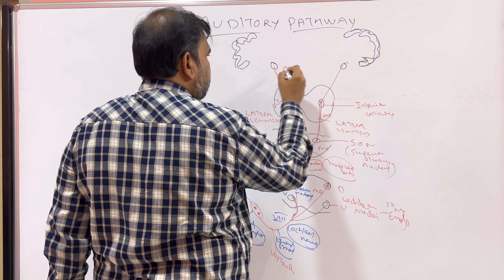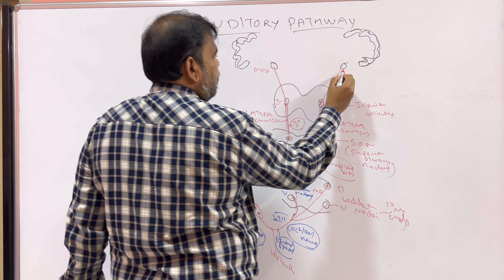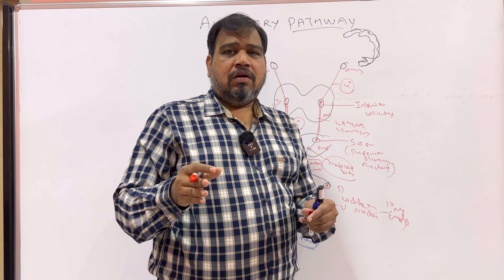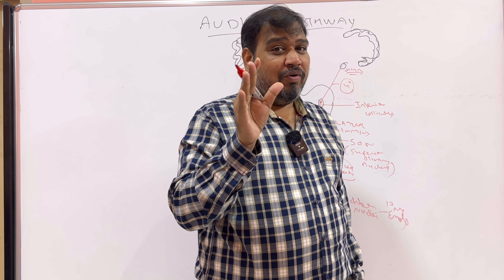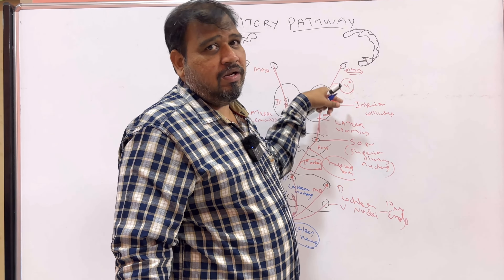From the inferior colliculus, the fibers of the auditory pathway reach the medial geniculate body, and we can consider this the fourth order neuron. If you remember from my previous video, I mentioned the mnemonic: M for music, so the medial geniculate body comes in the auditory pathway. The medial geniculate body is a part of the thalamus. From the medial geniculate body, the fibers reach the auditory cortex, area number 41. Area 42 can also be included. The second auditory cortex is area 22, also called the auditory association area. This will be the fifth order neuron. So this is the complete auditory pathway.